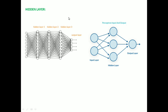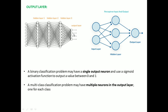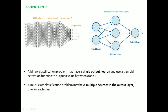Next comes the output layer, which represents the output of the neural network. The number of output neurons depends on the number of outputs expected. For a binary classification problem, we may have a single output neuron using a sigmoid activation function to output a value between 0 and 1. For a multi-class classification problem, we will have multiple neurons in the output layer — one for each class.